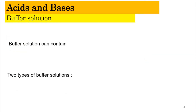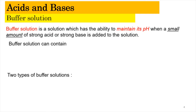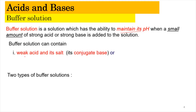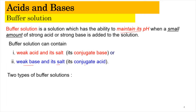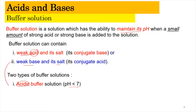Buffer solution is a solution that has the ability to maintain its pH when a small amount of a strong acid or strong base is added. A buffer solution can contain a weak acid and its conjugate base salt, or a weak base and its conjugate acid salt. The first mixture produces an acidic buffer with pH less than 7, and the second produces a basic buffer with pH greater than 7.